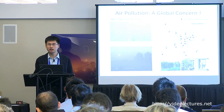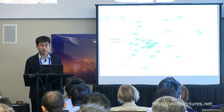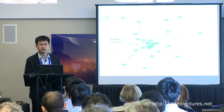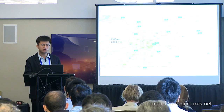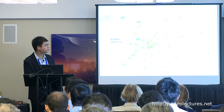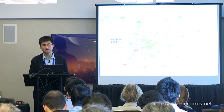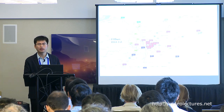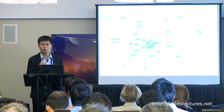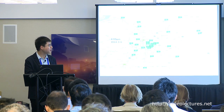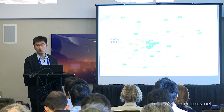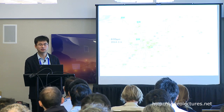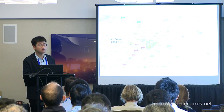In reality, air quality changes dramatically over time and location. This is a replay of real data in Beijing. Where each icon represents one monitoring station and the associated number is the air quality index — smaller is better, bigger is worse. Green means very good, red means very unhealthy.